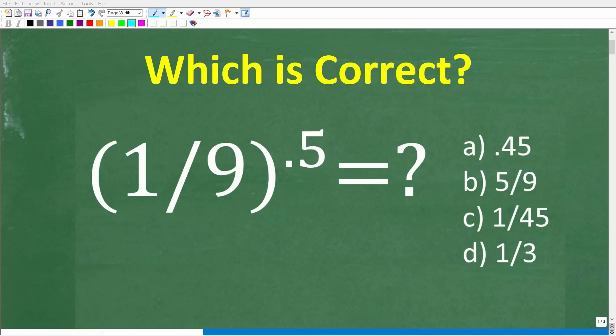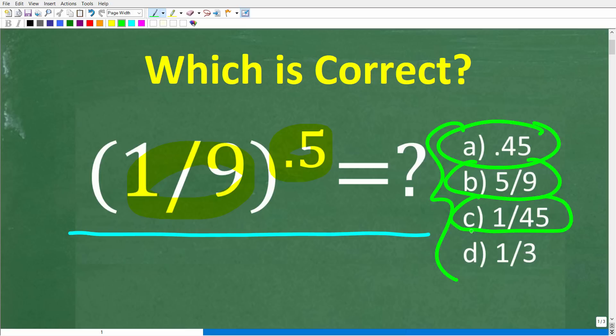All right, so if you actually understand powers and exponents, this will be a very easy problem to solve without a calculator. We have 1/9 to the 0.5 power. What is the answer? We have a multiple choice question here, and let's take a look at our options. So A is 0.45, B is 5/9, C is 1/45, and D is 1/3.